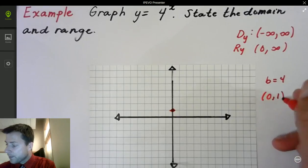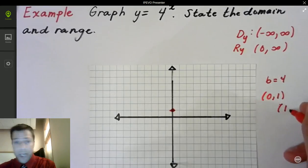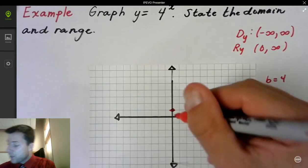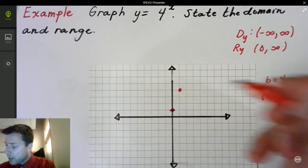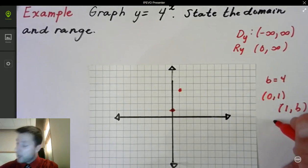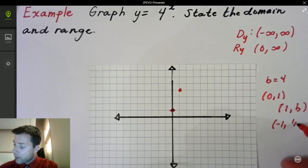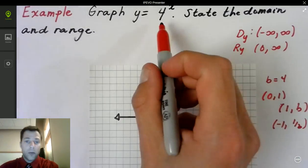So 0, 1. Then 1, comma b. Well, our b value is 4, so 1, comma 4 right here. And then the other point was negative 1, comma 1 over b. So negative 1 and 1 fourth.